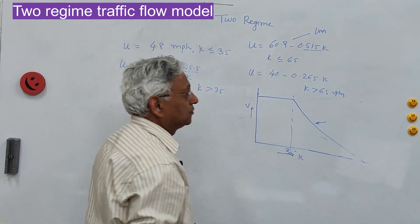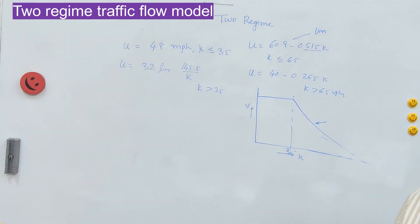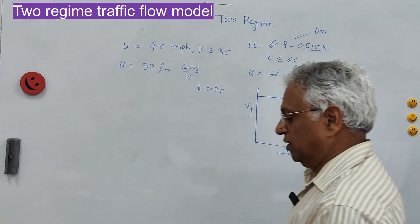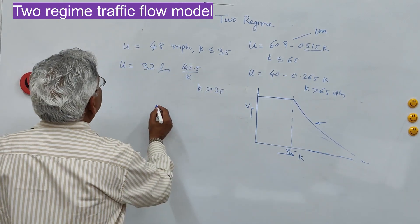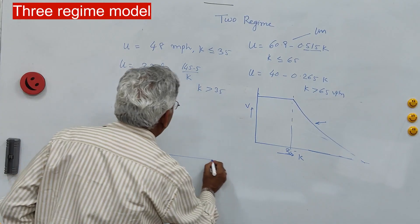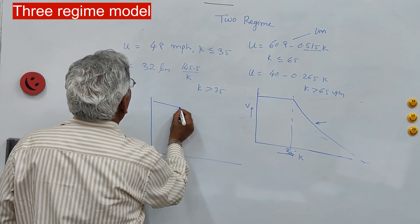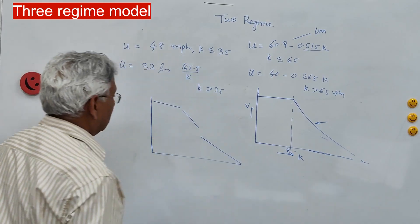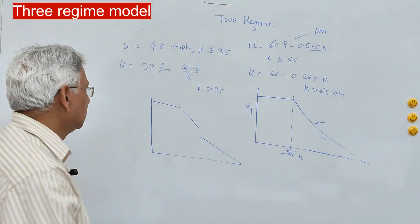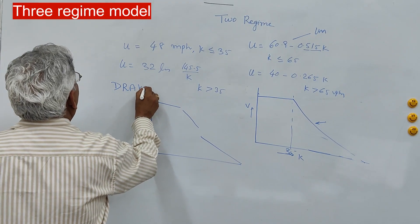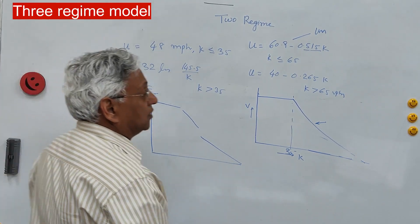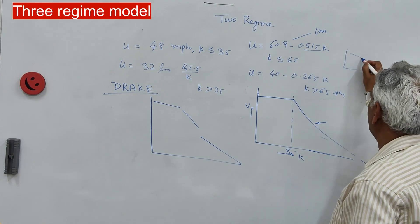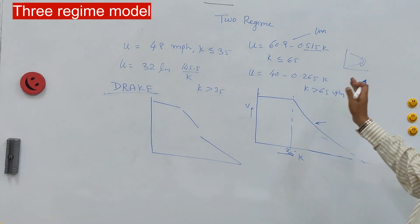You can convert this graph into a speed-flow diagram and find the maximum flow. In the case of a three-regime model, you can have a first regime that is flat, a second regime that is very steep, and a third regime that is again flat — all three being straight lines. That is the Drake model. Drake suggested three equations: one for uncongested flow, one for the transition zone, and one for congested flow conditions.